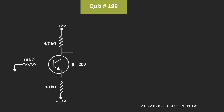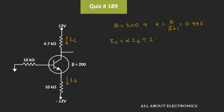We are also assuming that this collector current is approximately the same as the emitter current, because the value of β is very large — here β equals 200. If we calculate α, that is β divided by (β+1), it is approximately equal to 0.995. As it is close to unity, we can say that collector current Ic, which is α times Ie, is approximately equal to the emitter current.